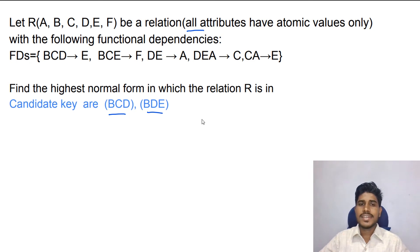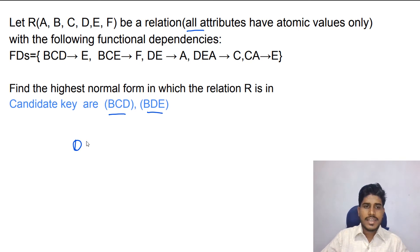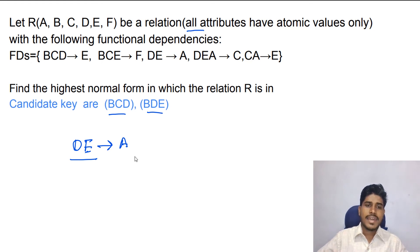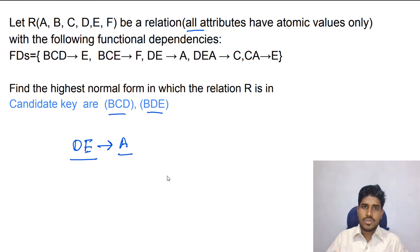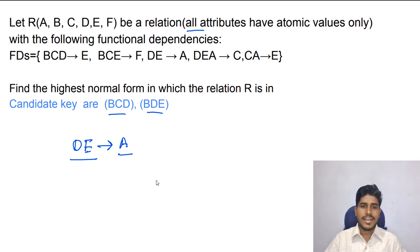Now we have to check whether this relation is in second normal form. You can see that D, E determine A. D, E is a proper subset of the candidate key and A is a non-prime attribute. So we can say that this relation contains a partial dependency. Therefore this relation is not in second normal form — this relation is in first normal form only.